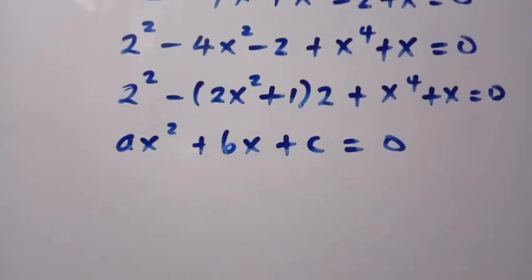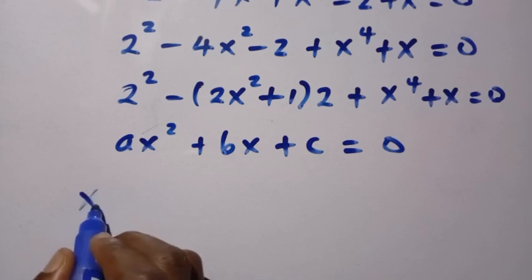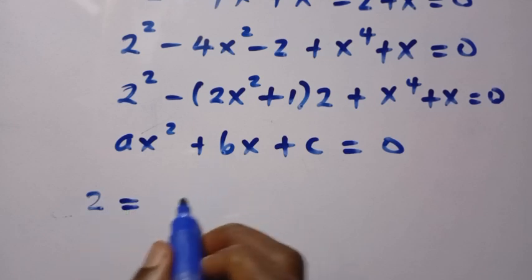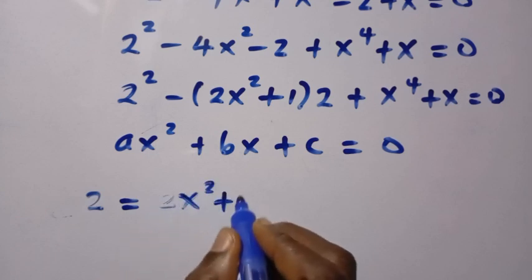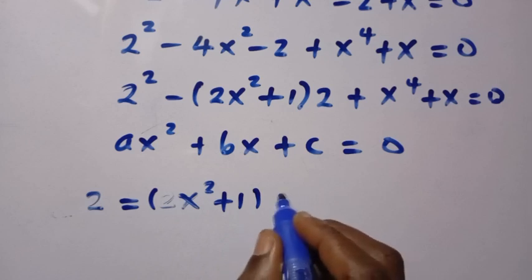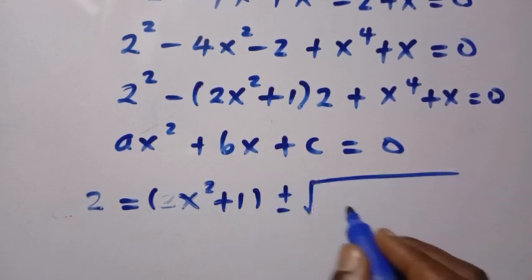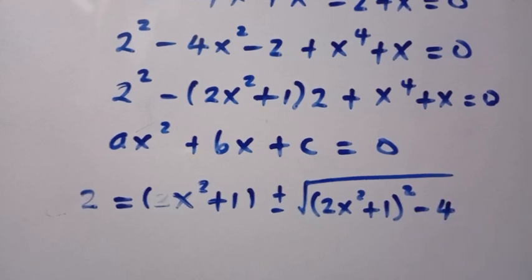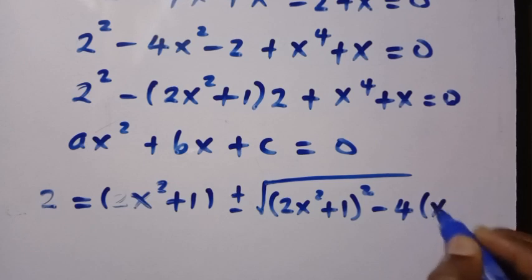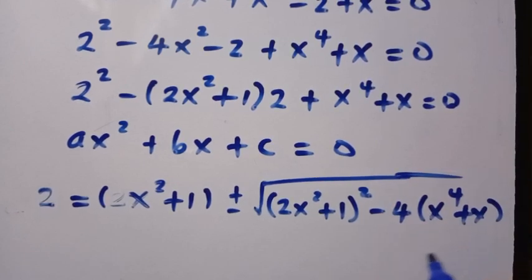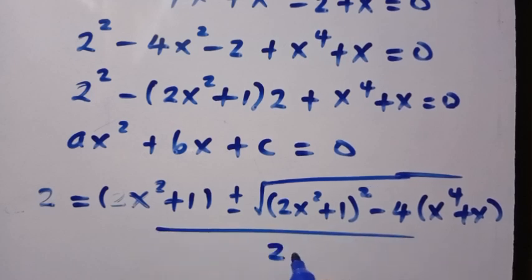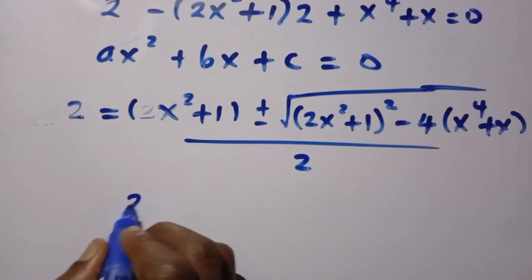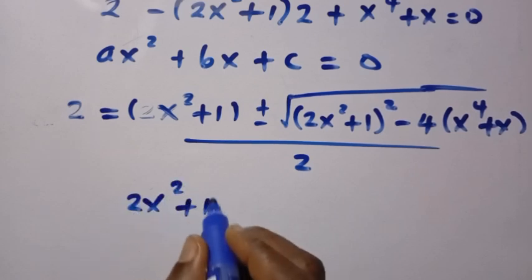By applying the quadratic formula, instead of x we write 2. So 2 will be equal to minus b, which is 2x squared plus 1 — the negatives cancel — plus or minus the square root of (2x squared plus 1) raised to the power of 2, then minus 4ac. Our a is 1 and c is x raised to power 4 plus x, all divided by 2a, where a equals 1.